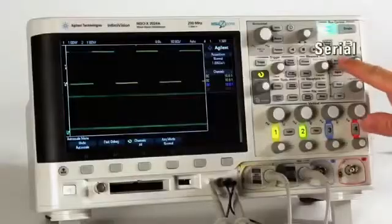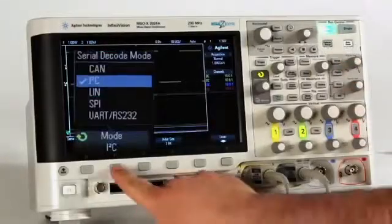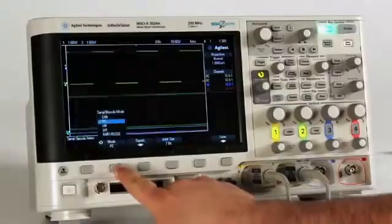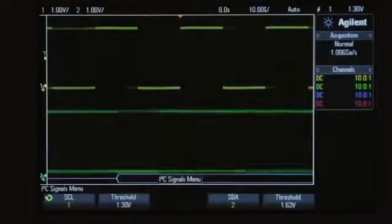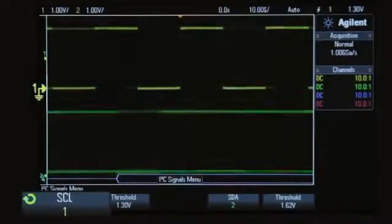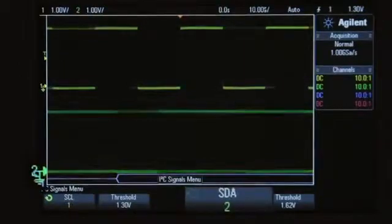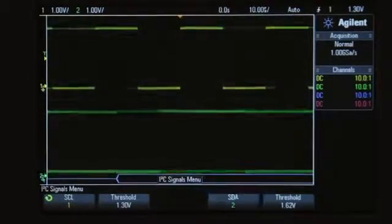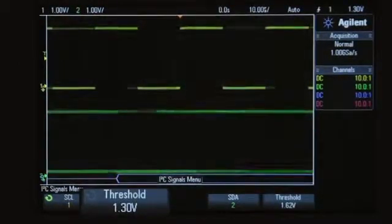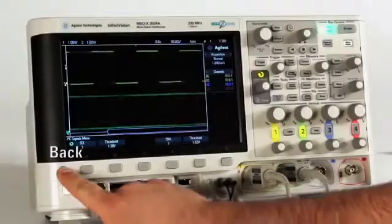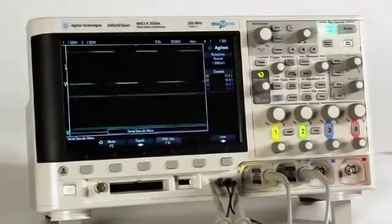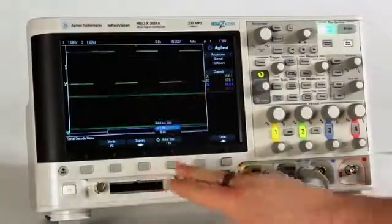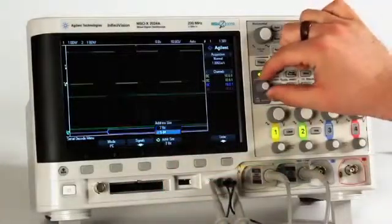Let's first set up the scope to intelligently decode and trigger on this data stream based on the I2C protocol. Press the Serial Front key and under Mode, select I2C. Press Signals and verify that SCL is defined as channel 1 and SDA is defined as channel 2. The trigger thresholds have already been set for us by the Auto Scale. Press Back to return to the previous menu and then press Address Size to verify your signal's address size is selected properly.